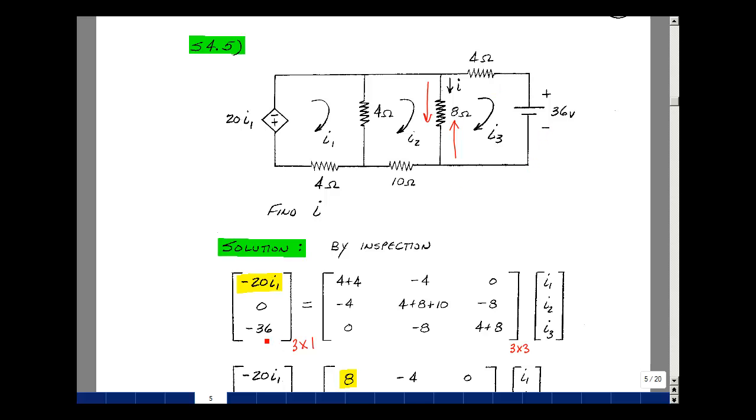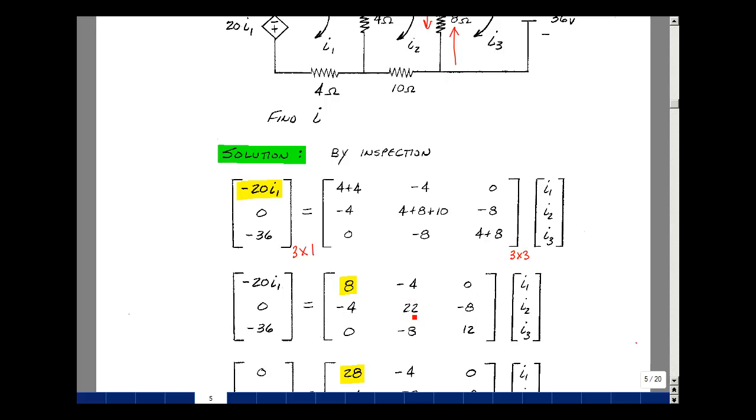Let's add up all our entries. So I have 8, minus 4, 0, minus 4, 22, minus 8, 0, minus 8, and 12. Notice that the matrix is symmetric. We have diagonals that are positive. Off diagonals, same value, all negatives, or 0.